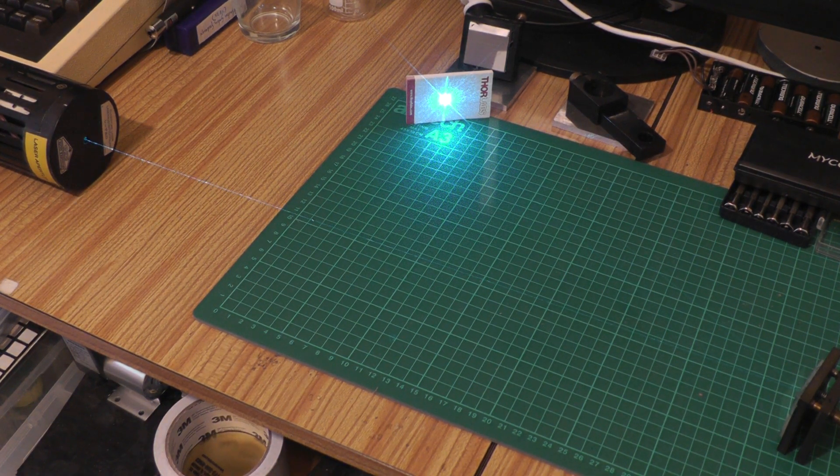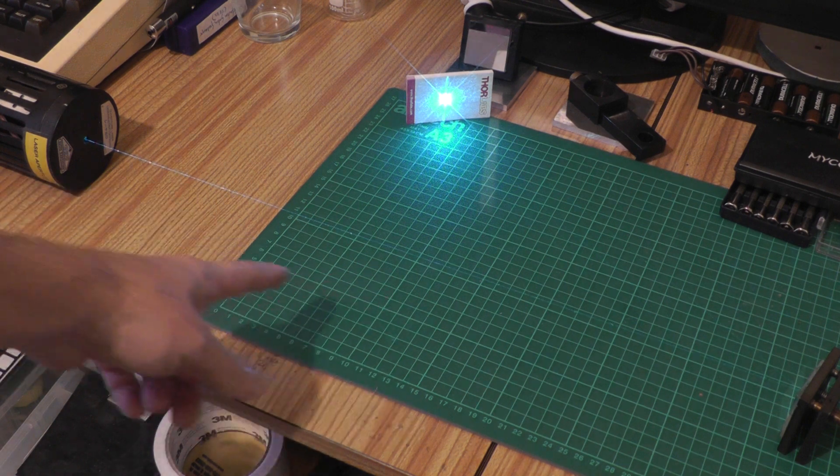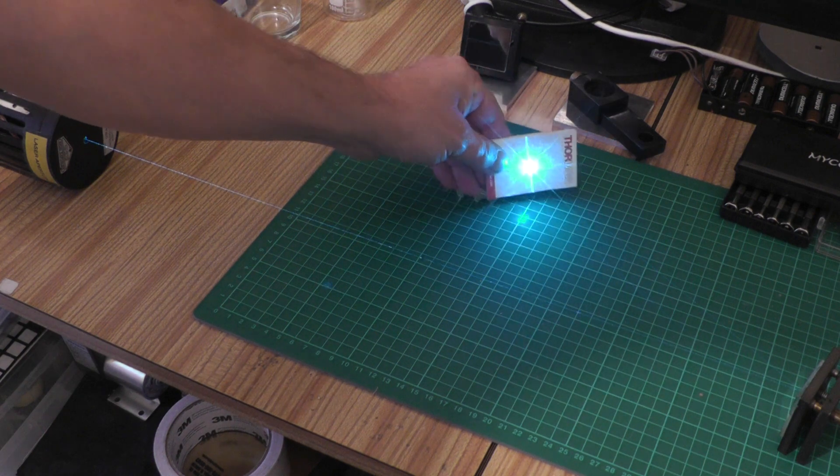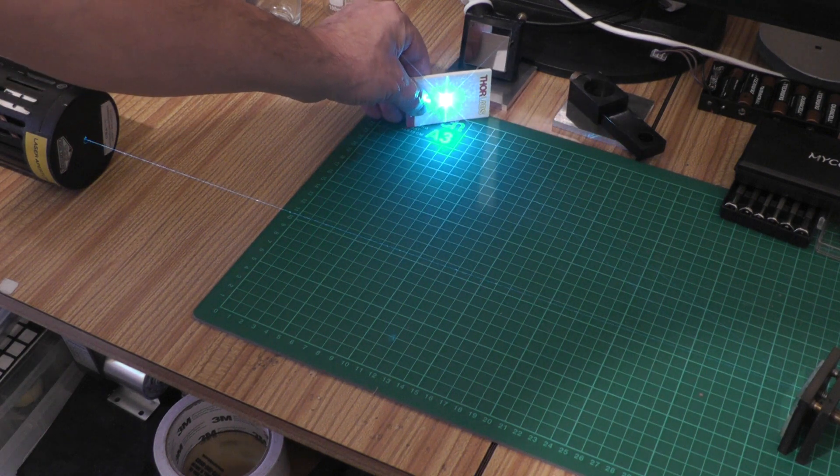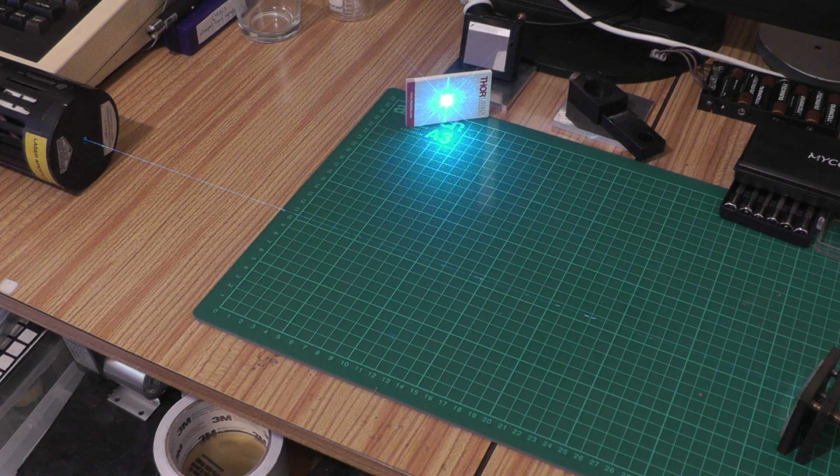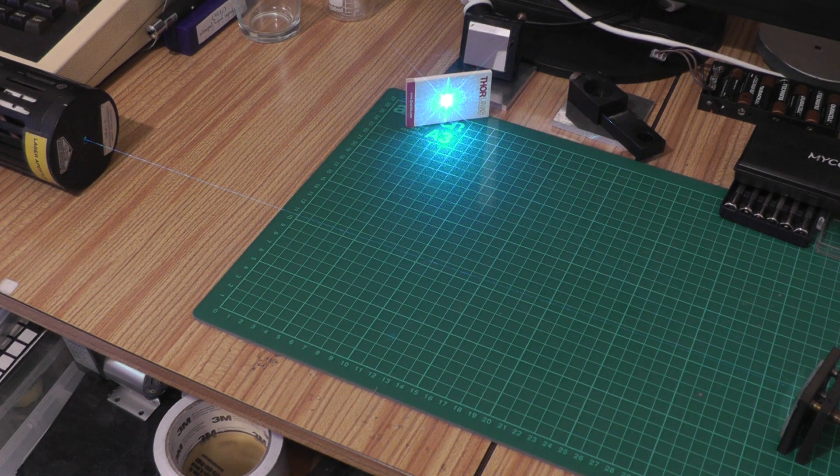So here's the laser running now, you should be able to see the beam coming out there hitting a mirror over the other side of the bench and then on to this target. It's very bright even at 6 milliwatts or so, this looks insanely bright. So I'll go down here and turn the current up and we'll see how far we can push this.